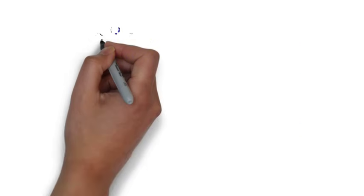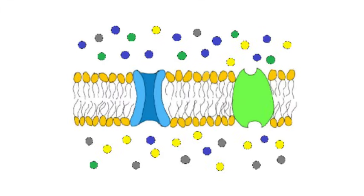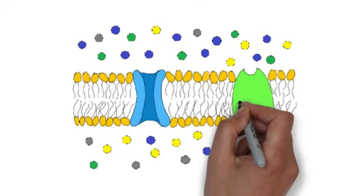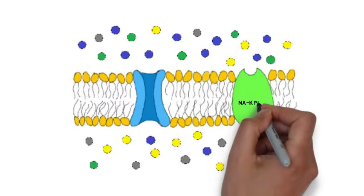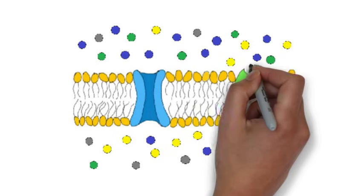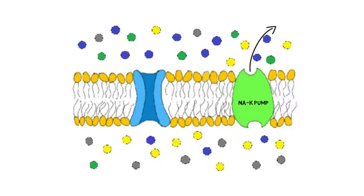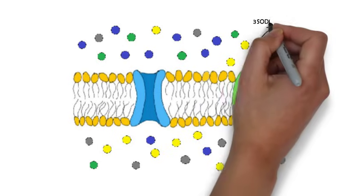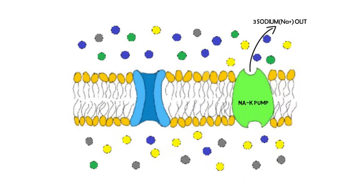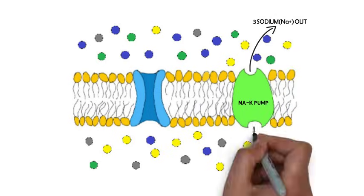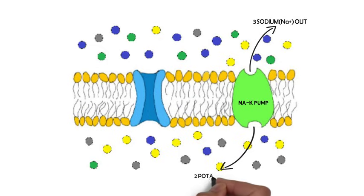One way this potential is maintained is through a mechanism known as the sodium-potassium pump. This is a transport protein that uses energy to constantly pump three sodium ions out of the cell, while at the same time pumping two potassium ions into the cell. Because there are more positive ions being pumped out than in, it helps to keep the membrane potential negative.